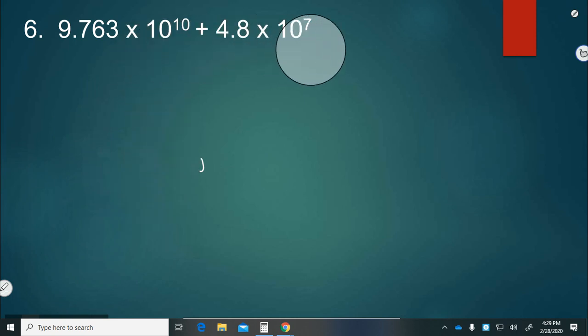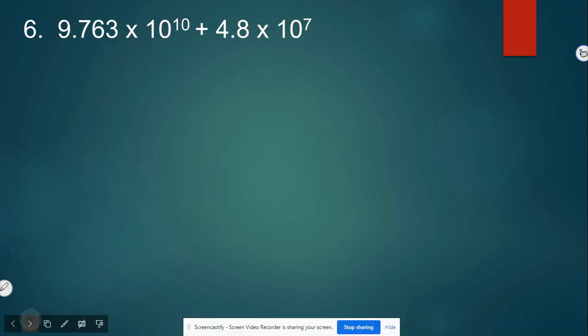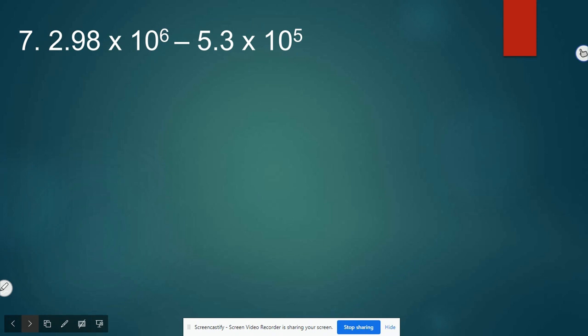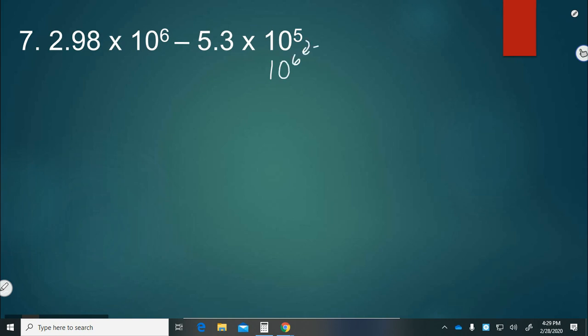All right. Number 7. Now we have 2.98 times 10 to the 6th minus 5.3 times 10 to the 5th. So we want to write that 10 to the 5th as 10 to the 6th. This is increasing by one. So we're going to move this back once. So it's 0.53 times 10 to the 6th. So we do 2.98 minus 0.53. 8 minus 3 is 5. 9 minus 5 is 4. And 2 minus 0 is 2. So our final answer is 2.45 times 10 to the 6th.